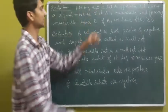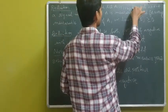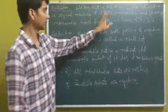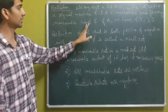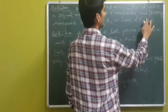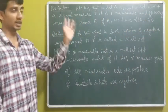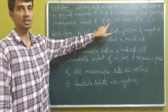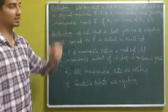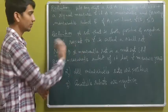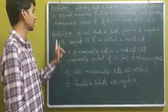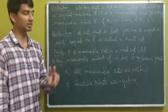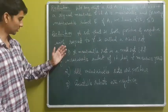We say that a set A is a negative set with respect to a signed measure if A is measurable and for every measurable subset E of A, we have the signed measure of E to be less than or equal to zero. And by null set we mean a set that is both positive and negative with respect to the signed measure.